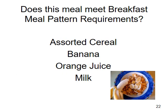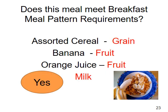Let's go through some menu examples to see if they meet the minimum daily components. Remember, the minimum components for breakfast are fruit, grain, and milk. Does this meal meet the breakfast meal pattern requirements? The menu is assorted cereals, a banana, orange juice, and milk. Yes — the meal has a grain (assorted cereals), two fruits, and a milk.